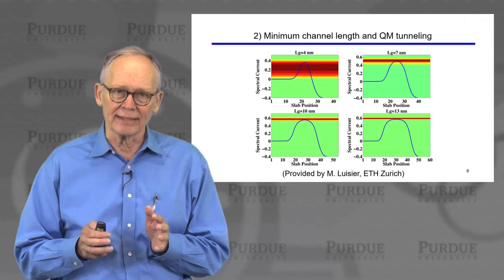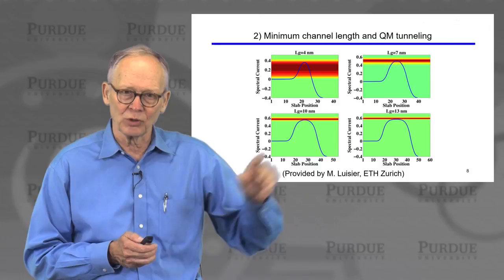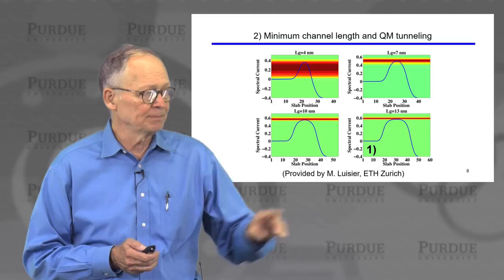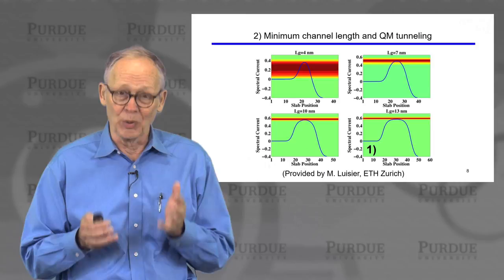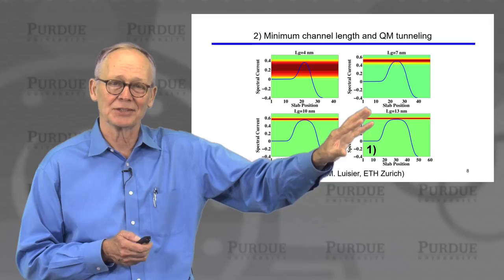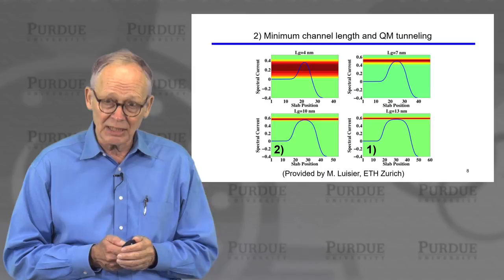Now let's think about the minimum channel length — the second limit. We can get a physical understanding from detailed numerical simulations of quantum transport in a nanoscale MOSFET. Starting with a fairly long channel of 13 nanometers, the red indicates where the current is flowing — over the top of the barrier, which is how a MOSFET is supposed to operate. Going down to 10 nanometers, you can begin to see a little bit of quantum mechanical tunneling underneath the barrier, but not very much.